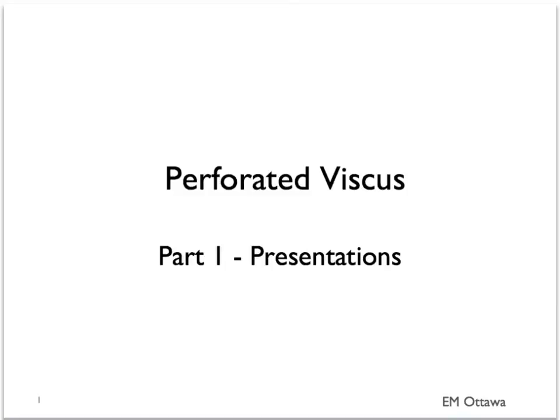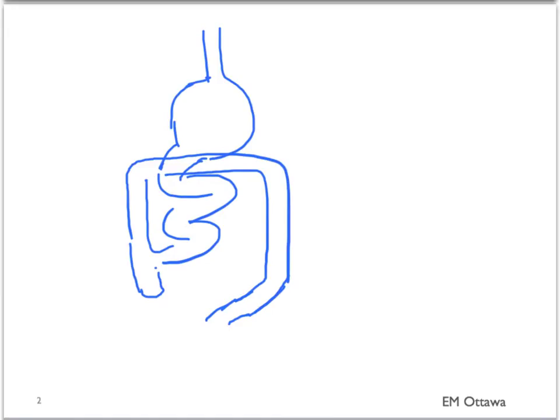Welcome to emergency medicine video. This video is about perforated viscus. We'll first discuss the causes and presentations of patients with perforated viscus. The definition of perforated viscus means the perforation of the GI tract, usually from the stomach all the way down to the end.